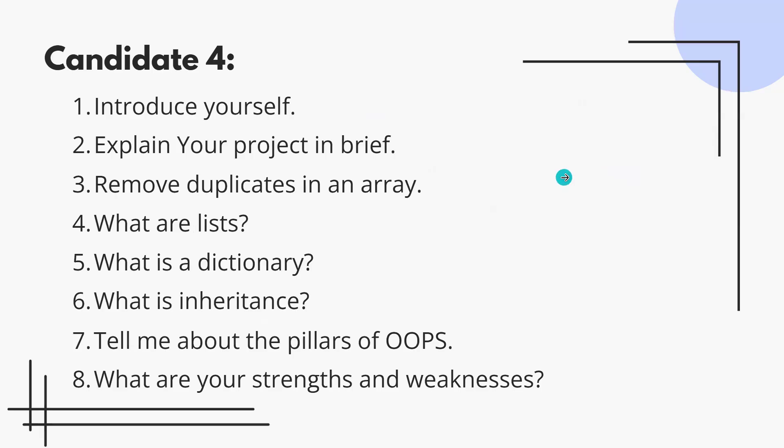Now for Candidate 4. The first and second questions are the same — introduce yourself and tell me about your project. Make sure to answer these very properly: talk about the problem it solves and the technology used. The third question is: write a program to remove duplicates in an array. You can use HashSet in Java, ordered set in C++, or dictionaries in Python for efficient solutions.